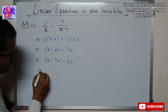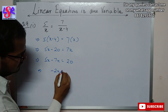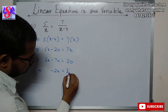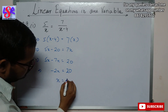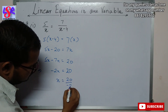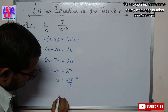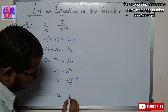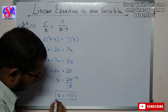This gives -2x = 20, so x = 20 / (-2). Cancelling, we get x = -10 as the answer.